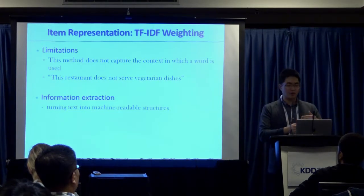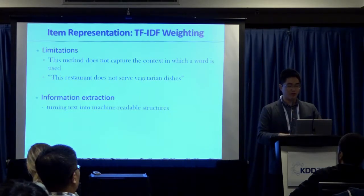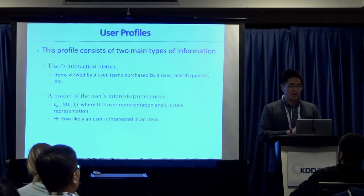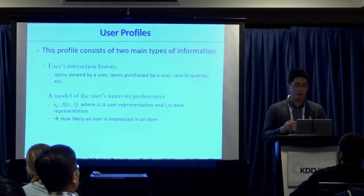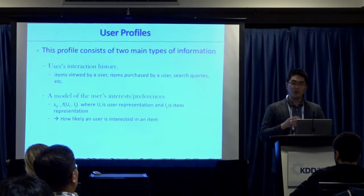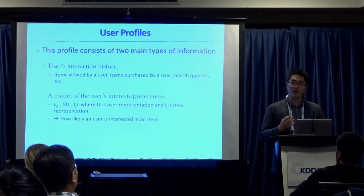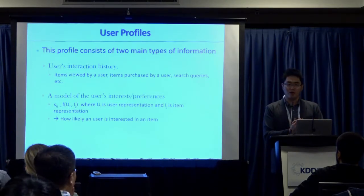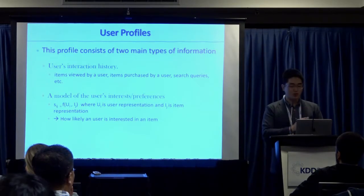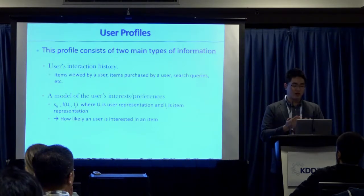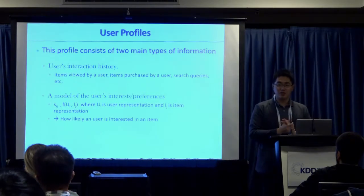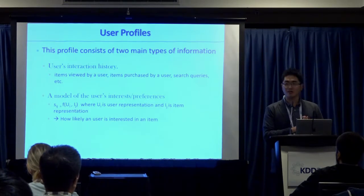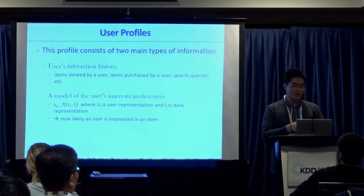There is work on using information extraction to derive entity names and relationships between entities from text, covered more in the morning tutorial. For user profiling, most approaches take the user's interaction history with items, aggregate item profiles together to represent the user — either weighted aggregation or other forms — essentially defining a function f that takes the user's past history and item profiles to get the user profile.